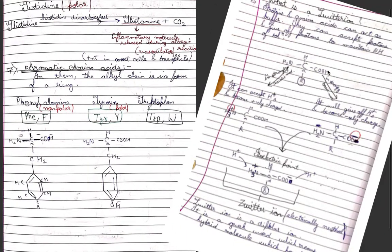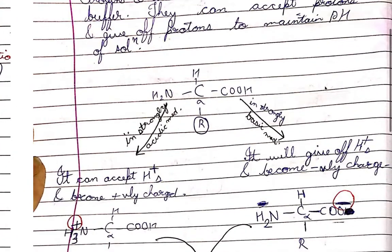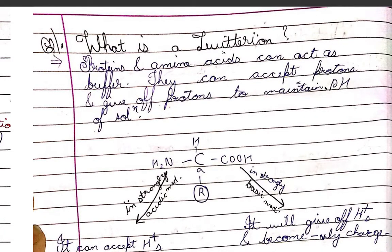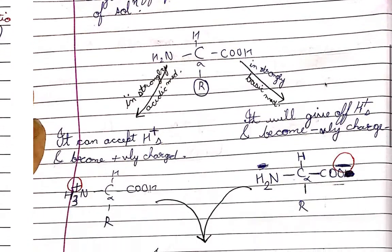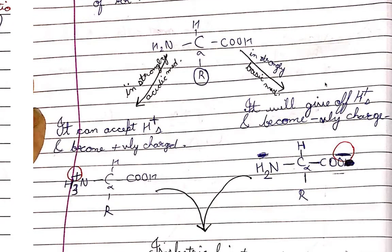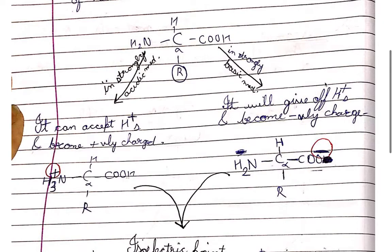Zwitterions - proteins and amino acids can act as buffers. They can accept protons and give off protons to maintain the pH of solution. This exchange of protons can maintain the pH. If you put a typical amino acid in a strongly acidic medium, it would accept hydrogen protons or H+ ions to become positively charged. If it is kept in a strongly basic or alkaline medium, it will give off the hydrogen and become negatively charged.